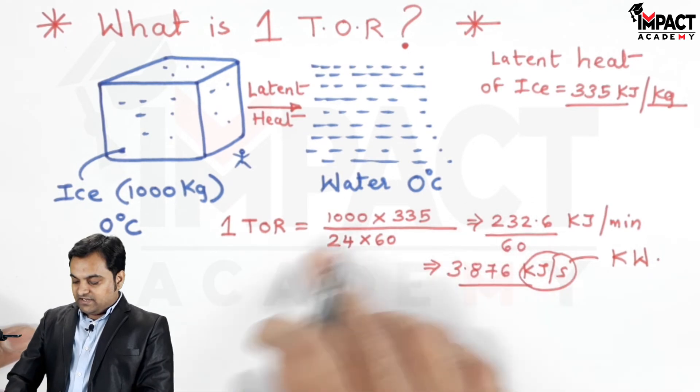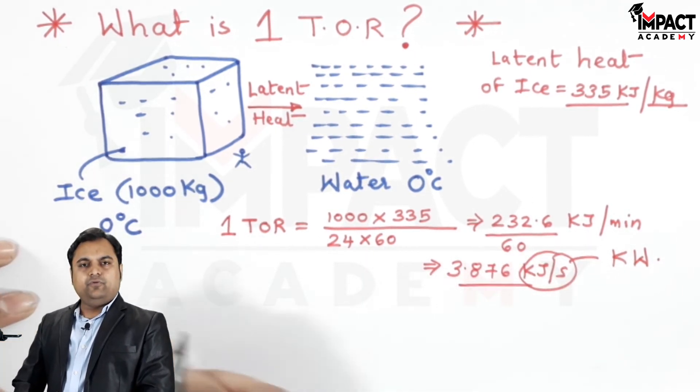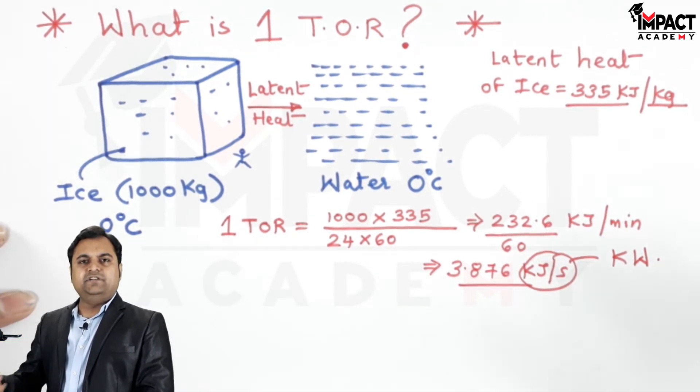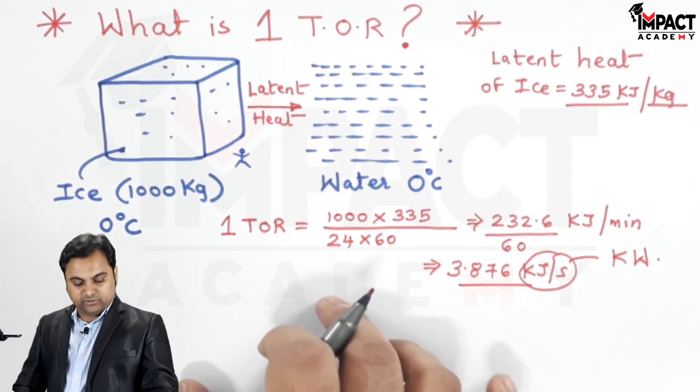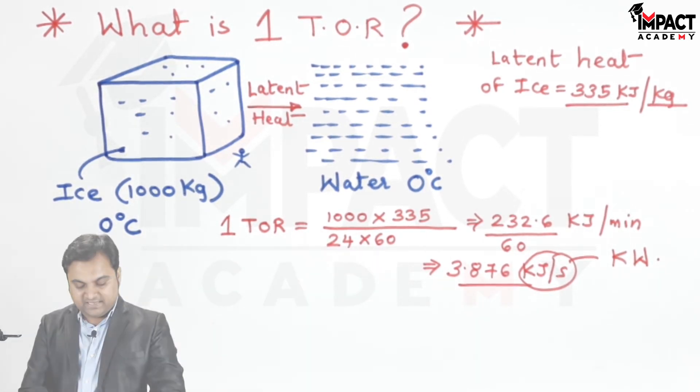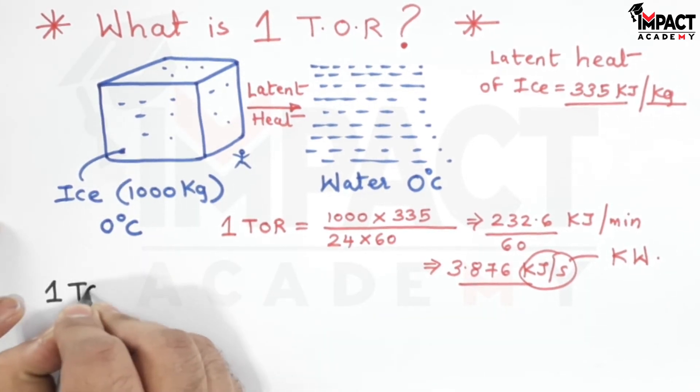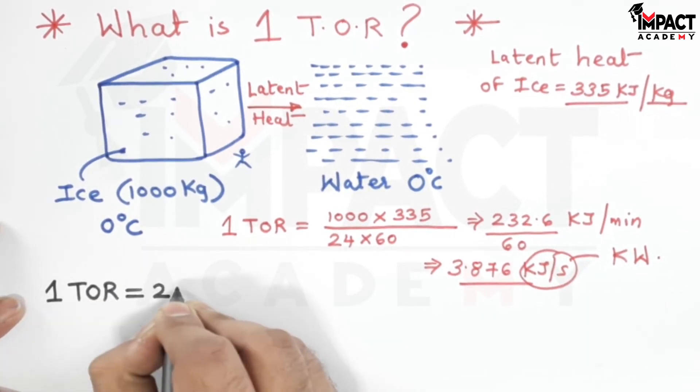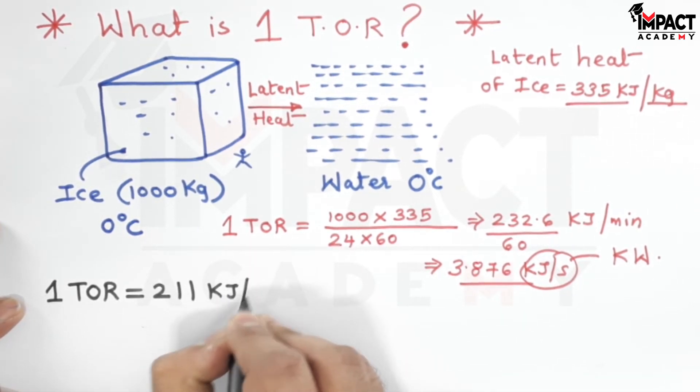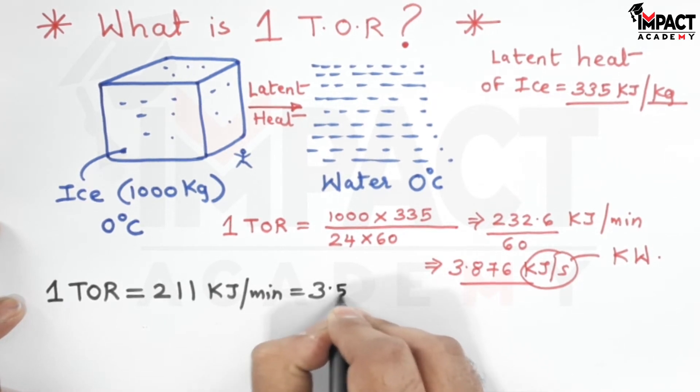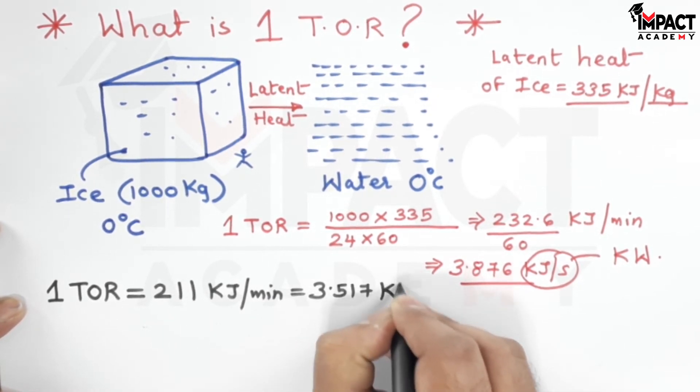And now these are the values which I am getting, but with the help of some experiments and practical values or practical readings, one ton of refrigeration is taken as 211 kilojoule per minute and it is equivalent to 3.517 kilowatts.